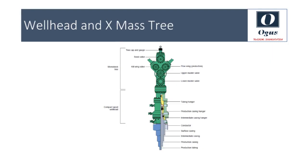The wellhead is the structure that forms the interface between the subsurface or drilling components and the surface or production components. Wellheads provide the suspension point and pressure seals for the casing strings that run from the bottom of the borehole to the surface. Wellheads are typically welded onto the first string of casing, cemented in place during drilling operations, to form an integral structure of the well. The wellhead consists of the casing head, casing hangers, the tubing head, tubing head adapter, and the tubing hanger.